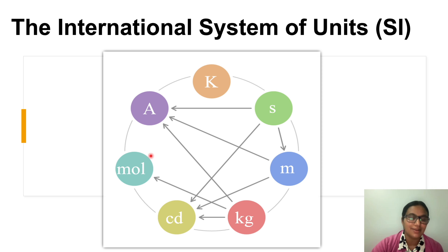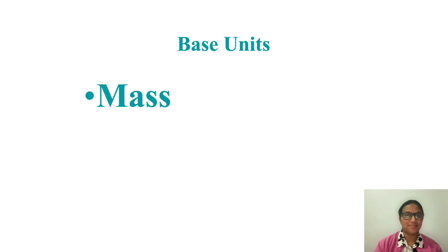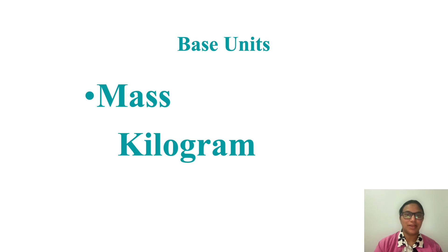The unit for amount of substance is mole, denoted by mol. The unit for electric current is ampere, denoted by capital letter A. Let us look at each of the seven base units one by one. First, mass: the unit is kilogram and the symbol is kg.